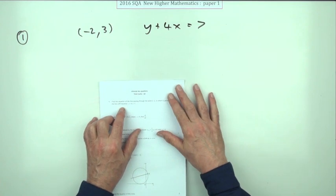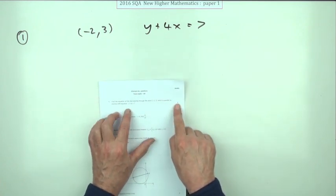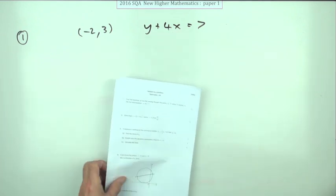Question 1 from the 2016 New Higher Maths Paper 1. There we go. For two marks, find the equation of a line parallel to this one which passes through the given point.